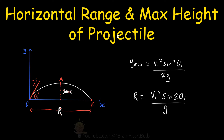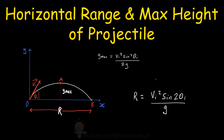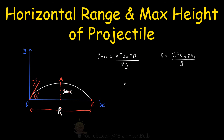Before we can derive these two equations, there are two assumptions we need to make. First, we're going to assume that air resistance plays no role in the motion of our projectile. So these equations only work when our projectile's velocity is relatively low and when the projectile is not spinning. If we did have air resistance in our model, then our projectile would experience a deceleration along the x-axis.